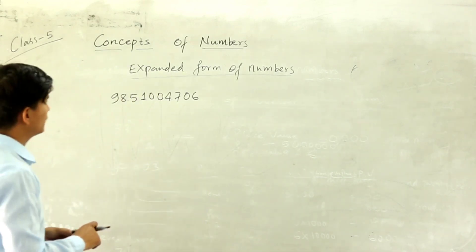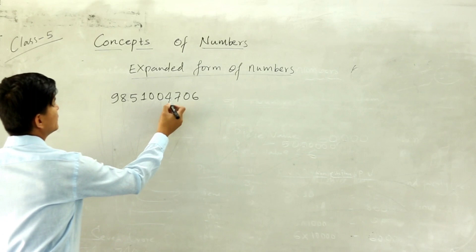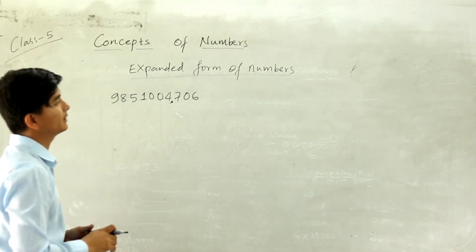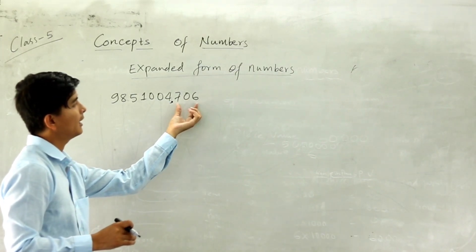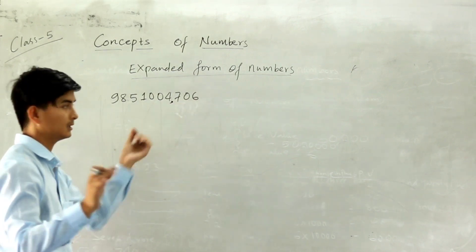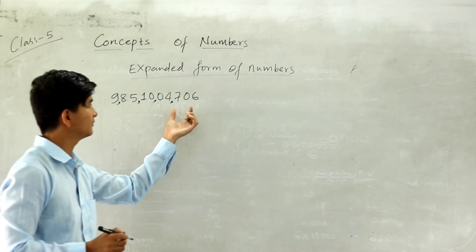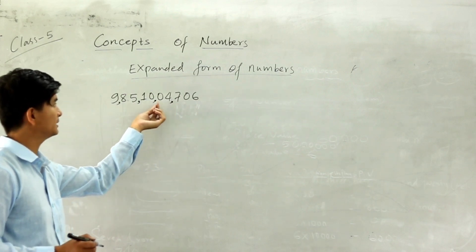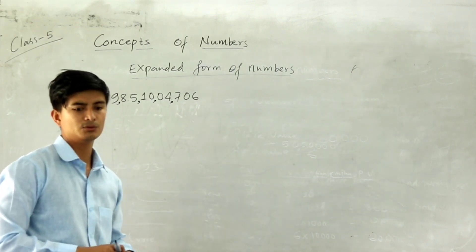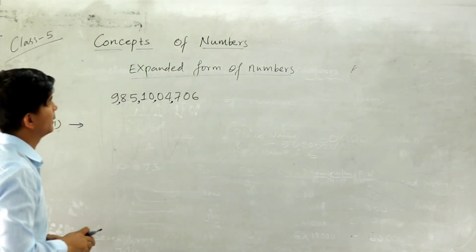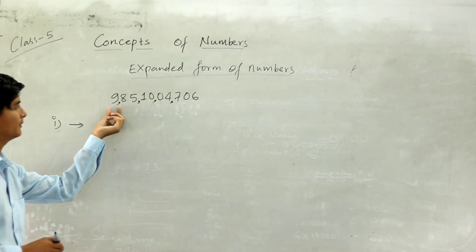So firstly, how can we expand this number? You can expand this number using place value. You can put a comma to separate its place value. We will do it with the national system — one, two, three. We have to give a comma after three digits, then after every two digits: comma, two digits, comma, two digits. After that, you have to identify the first form of expansion.